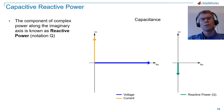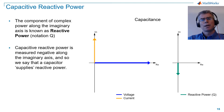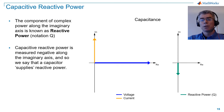With a capacitor, capacitive reactive power is measured negative along the imaginary axis, and so we say that a capacitor supplies reactive power. Again, this is convention.